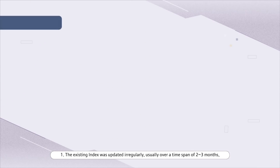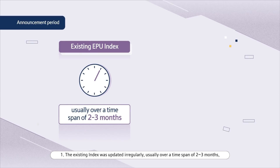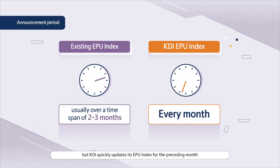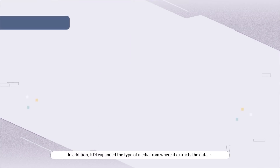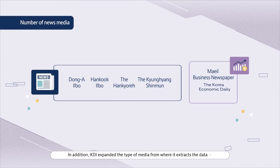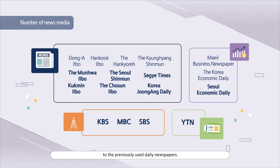Number one, the existing index was updated irregularly, usually over a time span of two to three months, but KDI quickly updates its EPU Index for the preceding month at the beginning of each month. Number two, KDI expanded the type of media from where it extracts the data, adding business newspapers and broadcasting companies to the previously used daily newspapers.